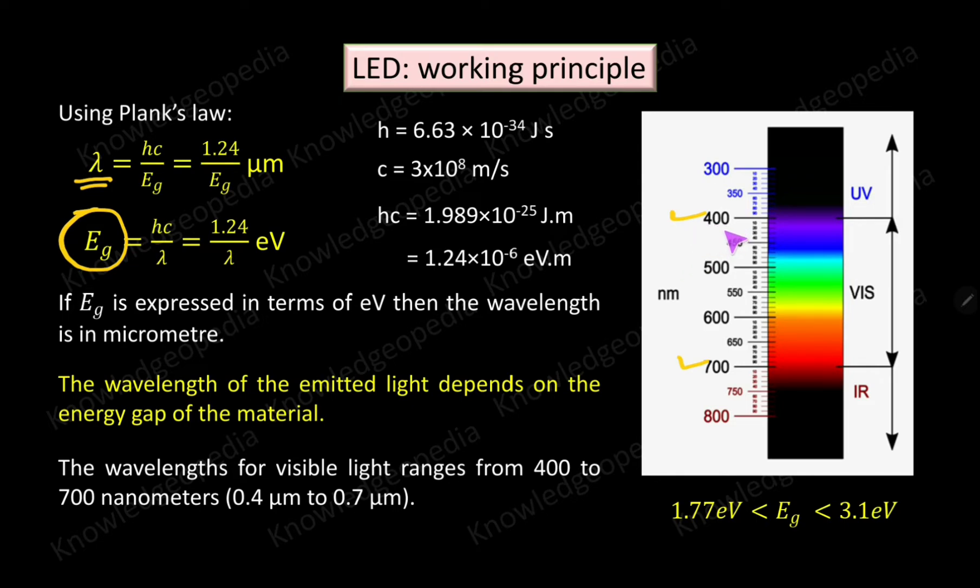From that we had calculated that the energy gap of the material which are suitable for emitting lights in the visible range lies between 1.77 electron volt to 3.1 electron volt.